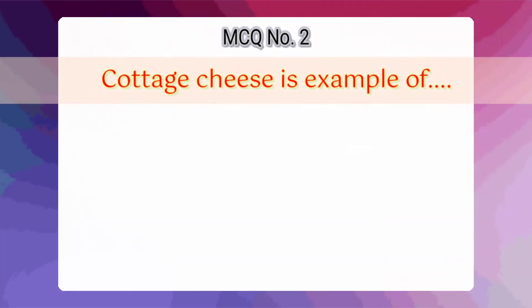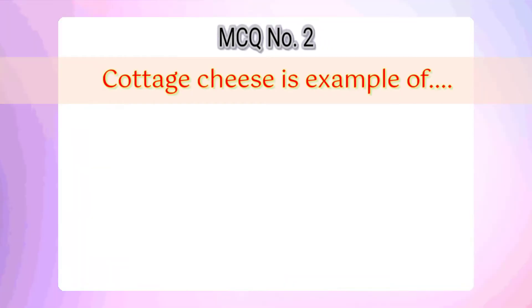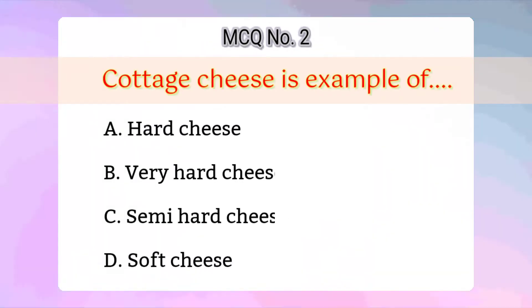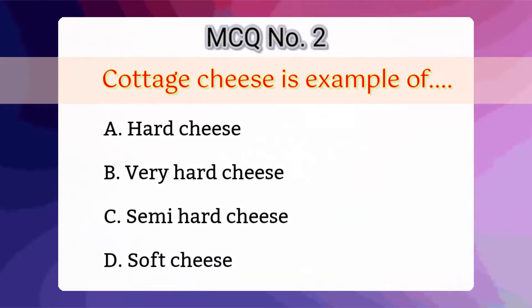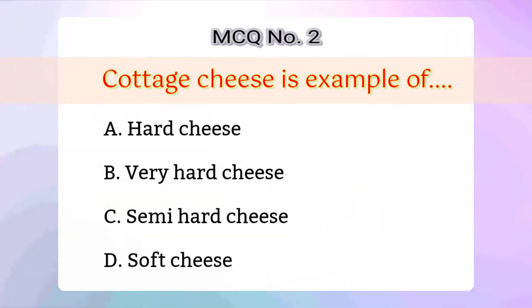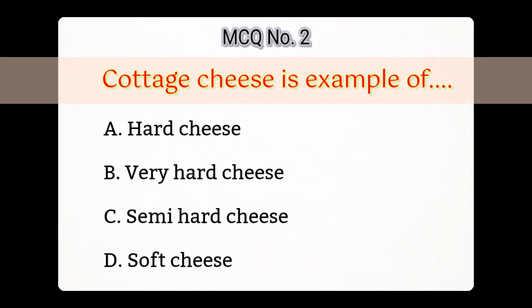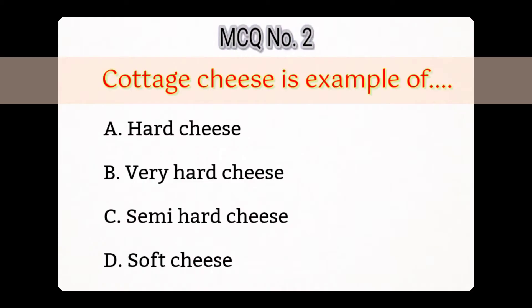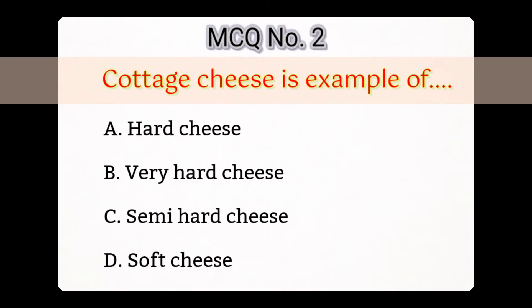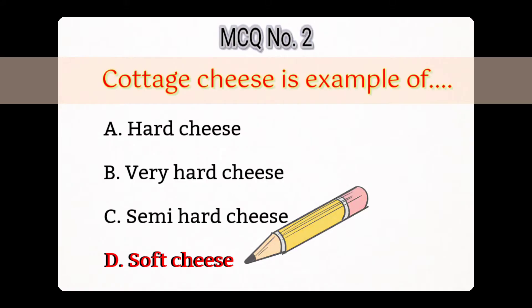Second question: Cottage cheese is an example of — Option A: Hard cheese, B: Very hard cheese, C: Semi hard cheese, D: Soft cheese. Answer is D: Soft cheese.